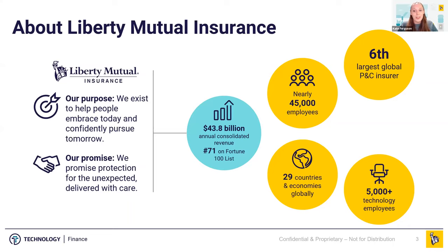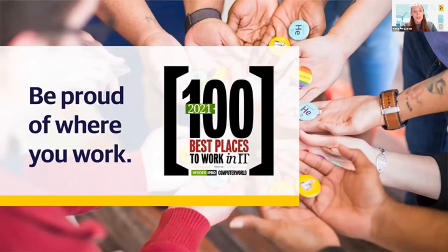Liberty Mutual is currently the sixth largest property and casualty insurer in the world. Technology underpins everything we do, and data plays a huge role in ensuring that all of our customers are taken care of. That's the reason why we have over 5,000 technology employees. We've also been named one of IDG's Insider Pro and Computer World's best places to work in IT for the second consecutive year.